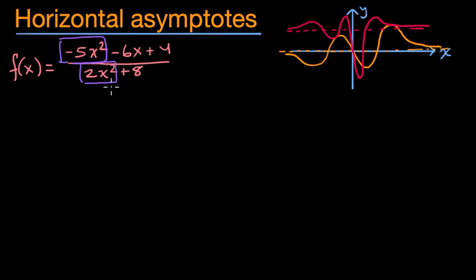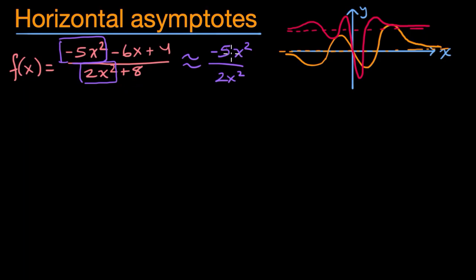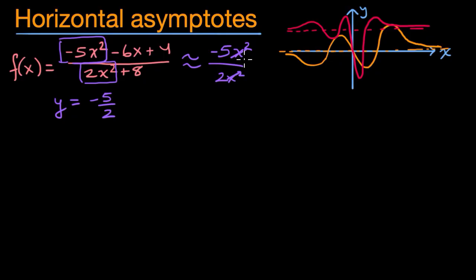One way to think about horizontal asymptotes is: look at the highest-degree term in the numerator and the denominator. For very positive or very negative x's, you're roughly looking at negative five x squared over two x squared. The x squareds cancel out and you approach f of x equal to negative five halves — in other words, the line y equals negative five halves. That's true for very negative x's as well as very positive ones.